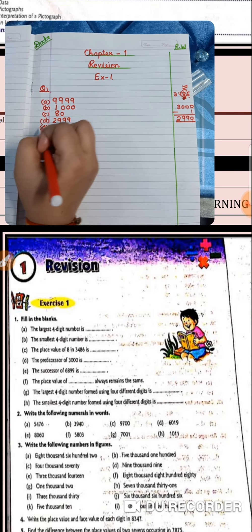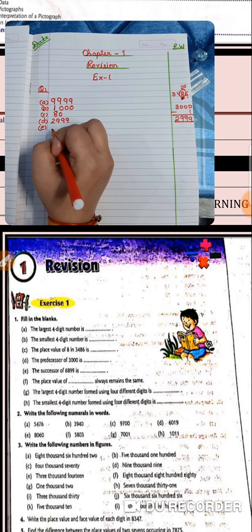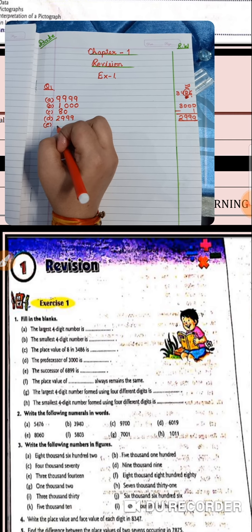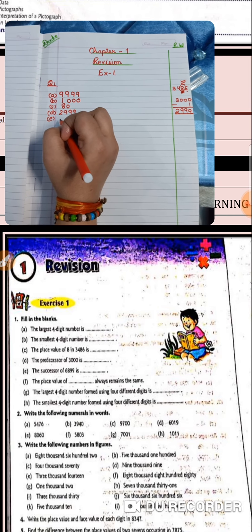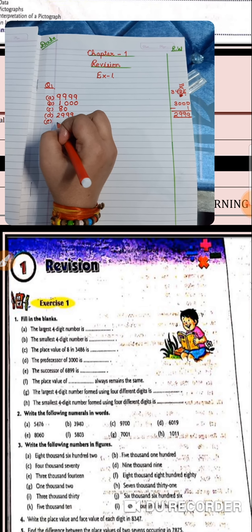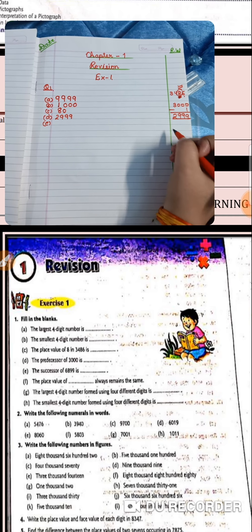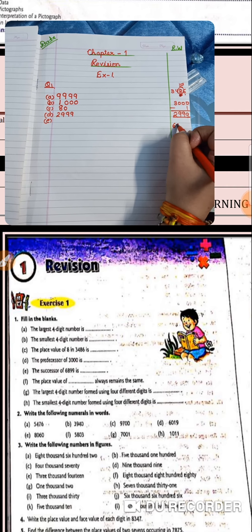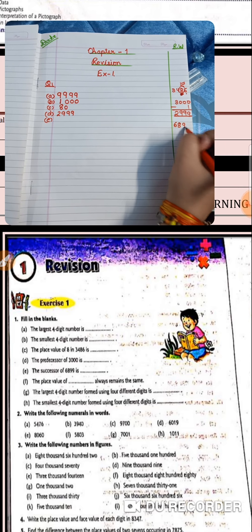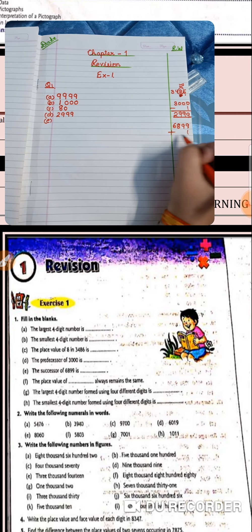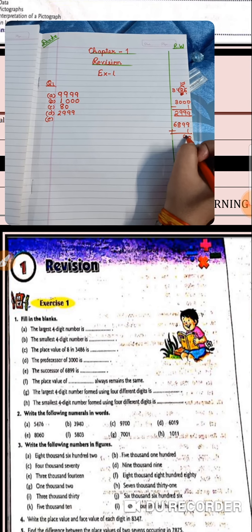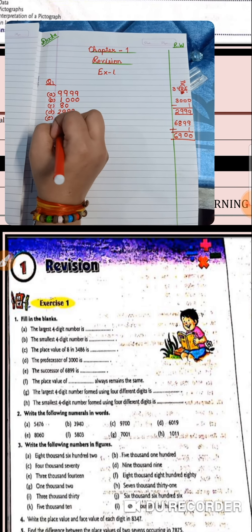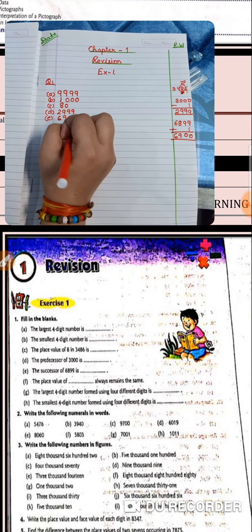Part E: the successor of 6,899 is blank. I told you that for the successor, you have to add 1. So 6,899 plus 1 — your answer will be 6,900.